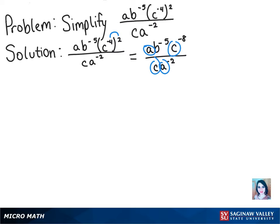So we can subtract their exponents from the numerator to the denominator, which will give us a to the power of 1 minus negative 2 times b to the negative 5th power times c to the power of negative 8 minus 1.